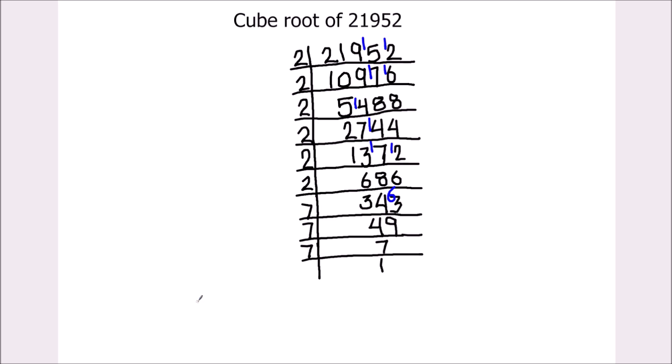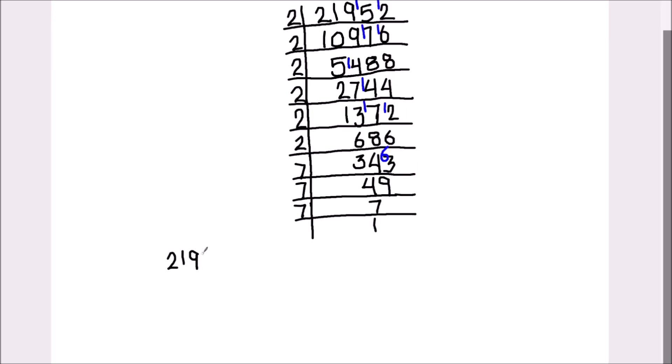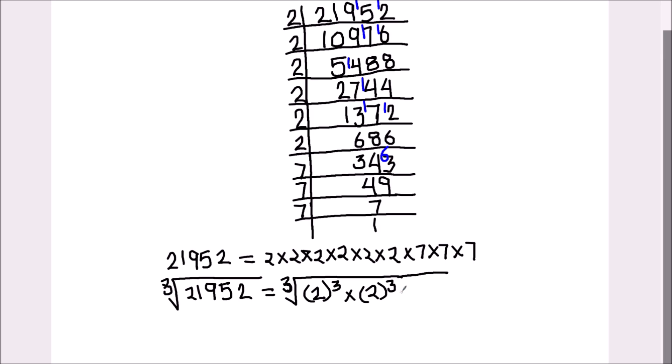Let's write this number as a product of this. 21,952 equals... To find the cube root of this number we have to take the cube root on both the sides. So cube root of 21,952 equals root of 2 times 2 times 2 times 2 can be written as again 2 cube and then 7 times 7 times 7 is 7 cube.